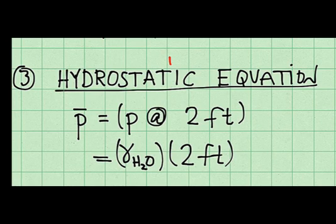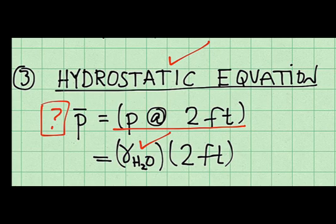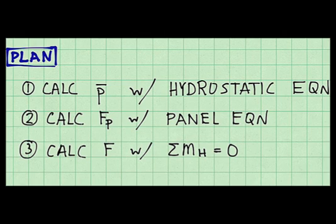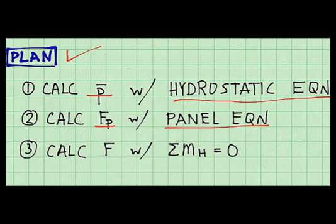So here's the hydrostatic equation. I'm looking for the pressure at a depth of two feet. Here's the equation after I do term-by-term analysis. Specific weight of the water is known. And so my goal right there can be easily found. Now I've got the problem cracked. I have three equations and three unknowns. My plan is to calculate the pressure at the depth of the centroid using the hydrostatic equation, to calculate the pressure force using the panel equation, and to calculate the applied load, my goal, using moment equilibrium.